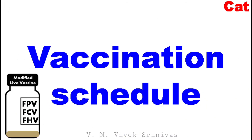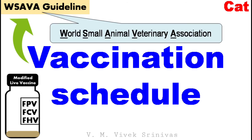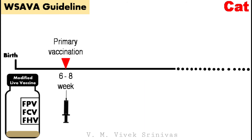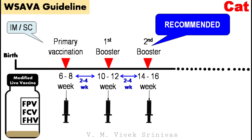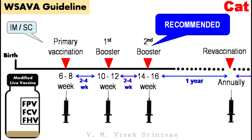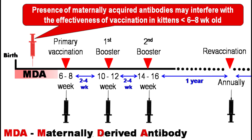Vaccination schedule. This multi-antigen vaccination is done as per the WSAVA guideline — a global guideline given by the World Small Animal Veterinary Association. As per its vaccination schedule, the primary vaccination in cats is done at 6–8 weeks of age, either intramuscularly or subcutaneously, followed by 2 booster doses with 2–4 weeks apart. The second booster is a recommended dose. To maintain protective immunity, re-vaccination is done annually. If the kitten is vaccinated at less than 6–8 weeks of age, the effectiveness of vaccination may be interfered with due to the presence of maternally derived antibodies transferred from mother to kitten.